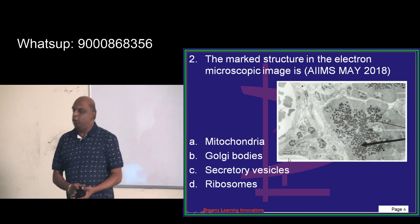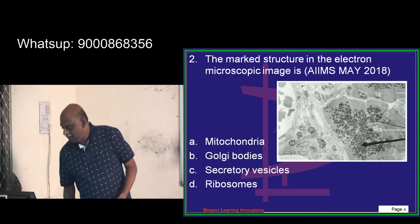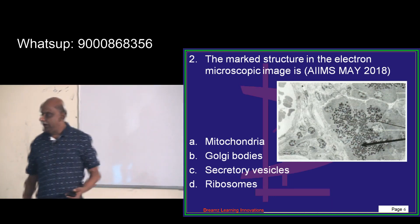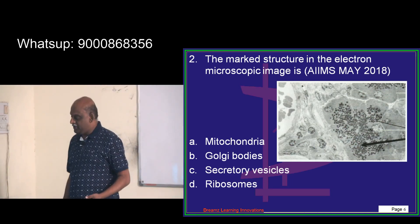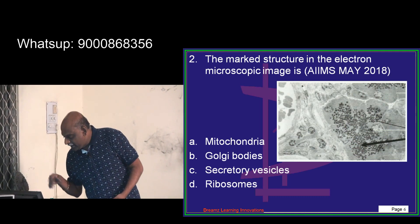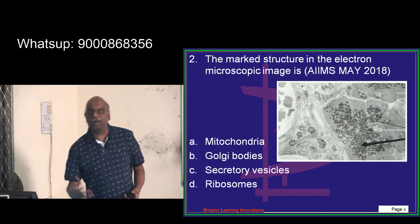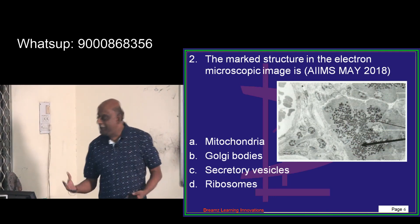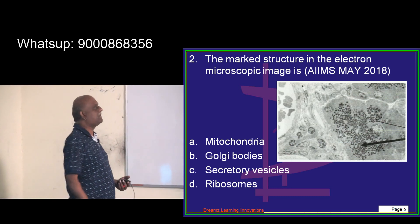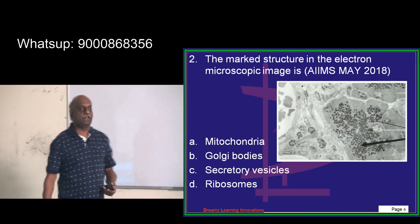The next question asks about a structure seen in an electron microscopic image. There are 178 online students across the country.